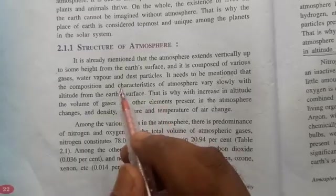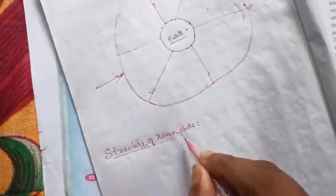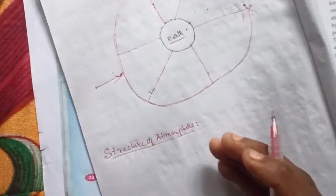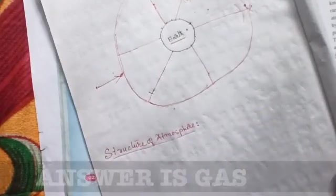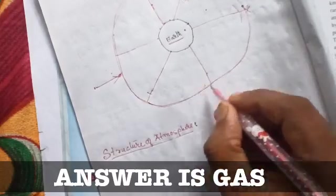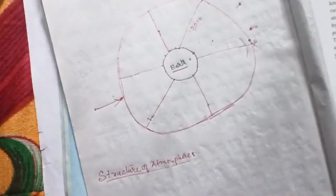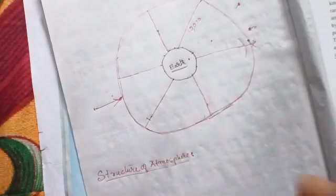Now see the next topic, structure of atmosphere. Structure of atmosphere means atmosphere is made up of what - solid part, liquid part, or gaseous part? Atmosphere is made up of gas. All types of gas are there. What are the gases that are present in atmosphere?